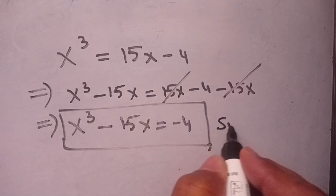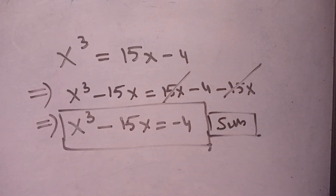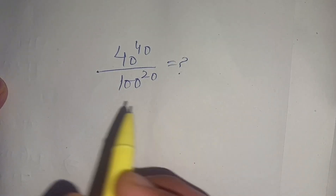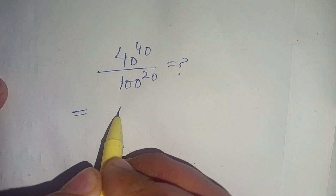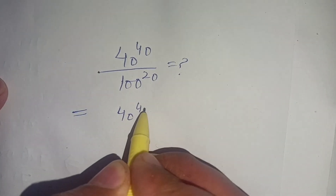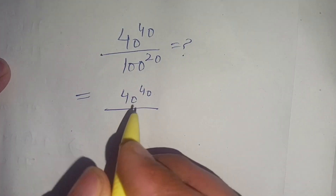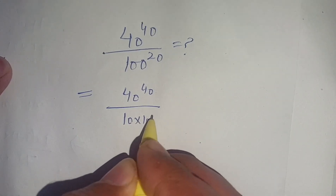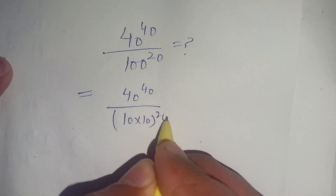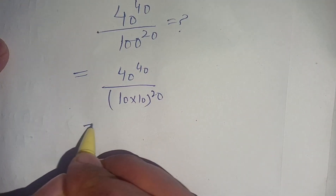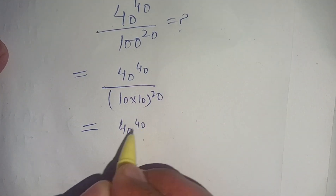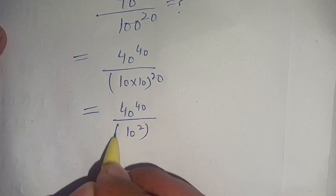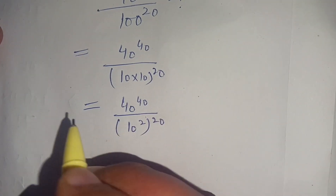Make sure to subscribe to our channel for more informative videos. Now let us solve the next problem: 40 to the power 40 divided by 100 to the power 20. First, 100 can be written as 10 times 10, so we have 40 to the power 40 divided by (10 times 10) to the power 20.